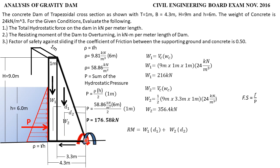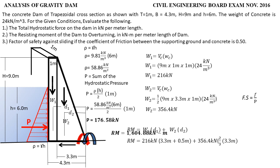Substituting into the resisting moment formula: W1 times d1 is 216 kN times (3.3 + 0.5), and W2 times d2 is 356.4 kN times (2/3 × 3.3). The resisting moment equals 1,604.88 kilonewton-meters.